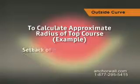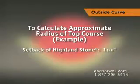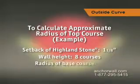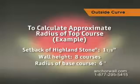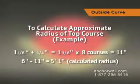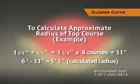Here's an example. The setback of Highland Stone is 1 1/8 inches. The wall is 8 courses high. The radius of the base course is 6 feet. Plugging in the numbers: 1 1/8 inches plus 1/4 inch equals 1 3/8 inches, multiplied by 8 courses equals 11 inches. 6 feet minus 11 inches equals 5 feet 1 inch, which is the calculated radius of the top course.